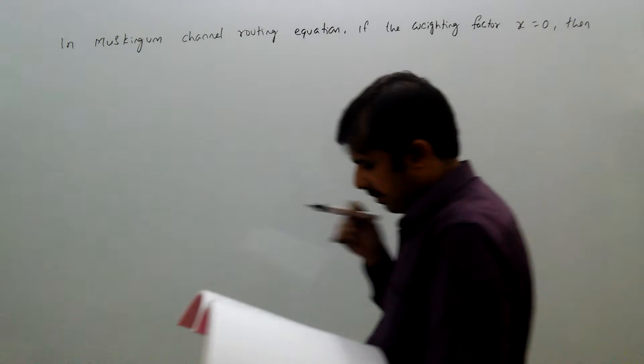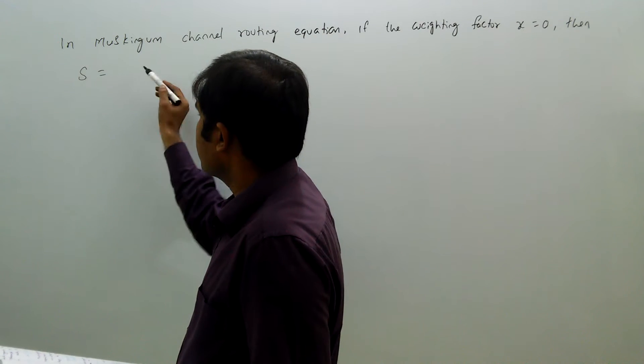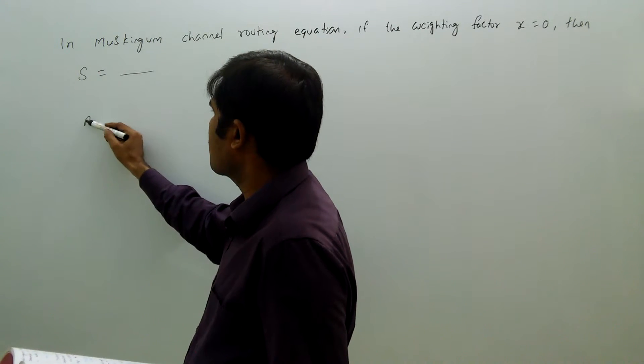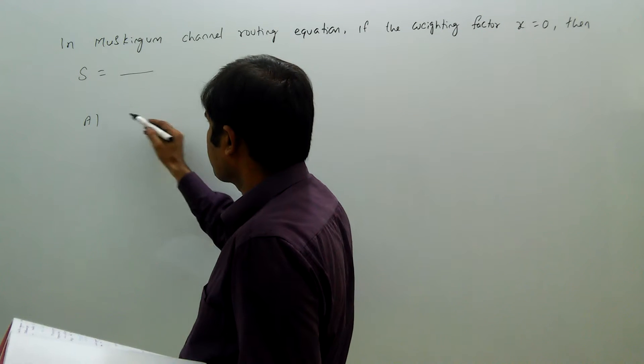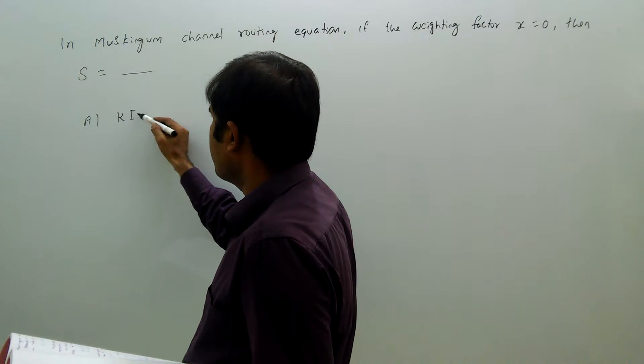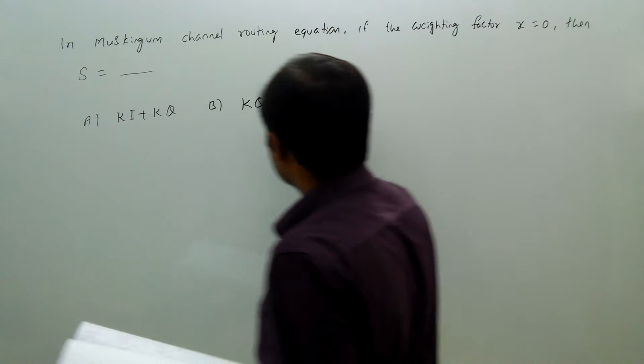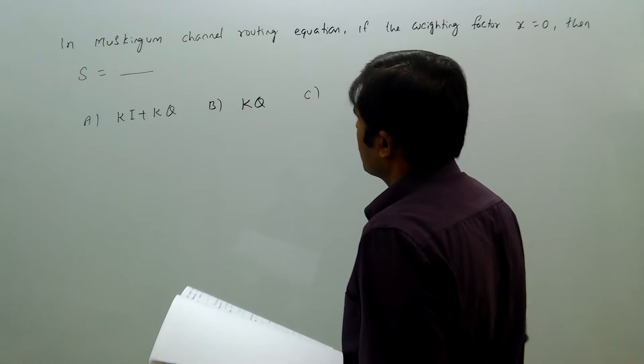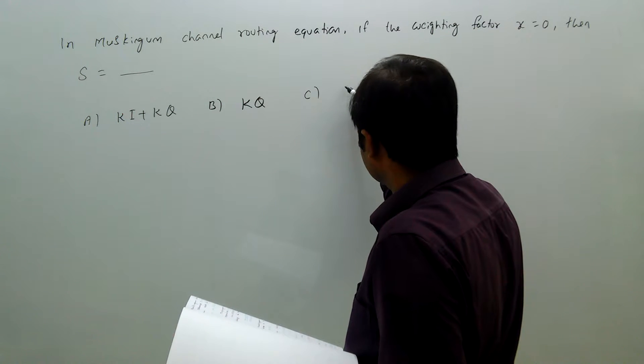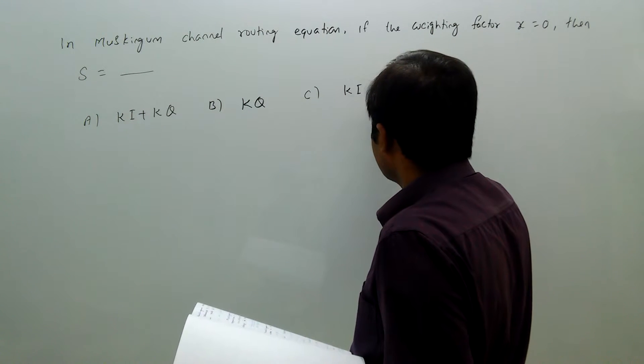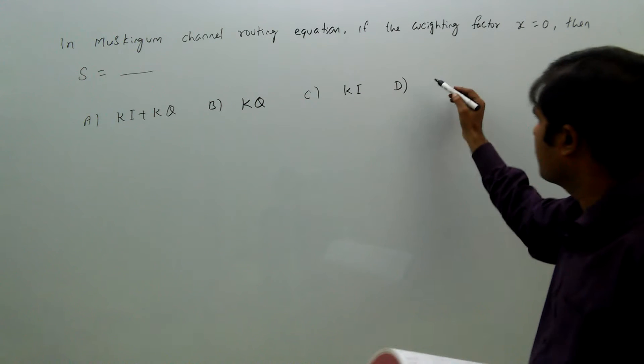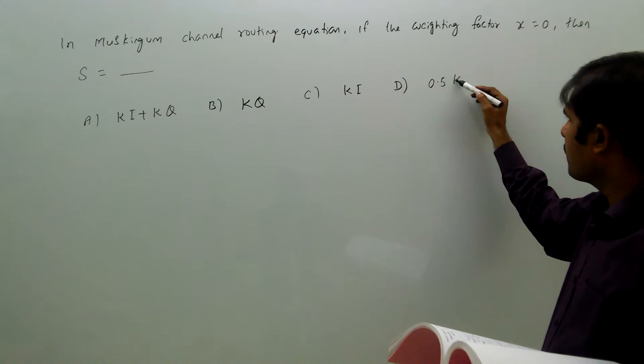then S equals dash. Option A: K·I + K·Q. Option B: K·Q. Option C: K·I. Option D: 0.5·K·Q.